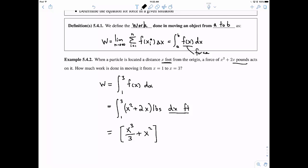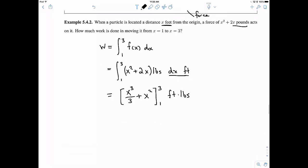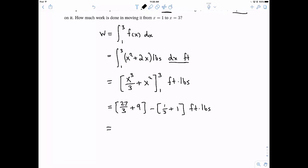So let's go ahead and integrate it from 1 to 3. And again, our units are foot-pounds. So if I plug in 3 into this x cubed over 3 and x squared, I get 27 over 3 plus 9. Then I plug in my 1 and subtract that whole quantity away. Again, our units are foot-pounds.